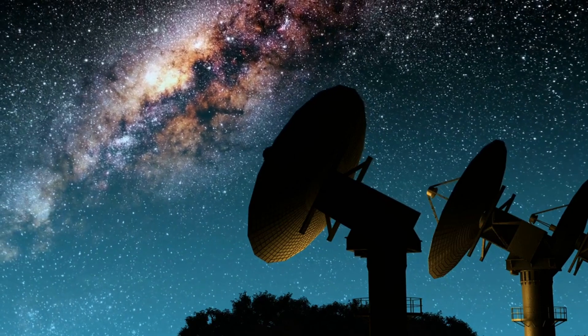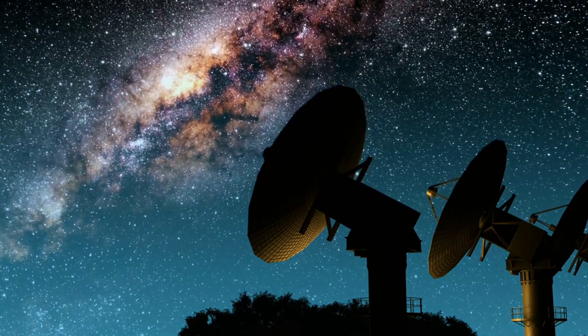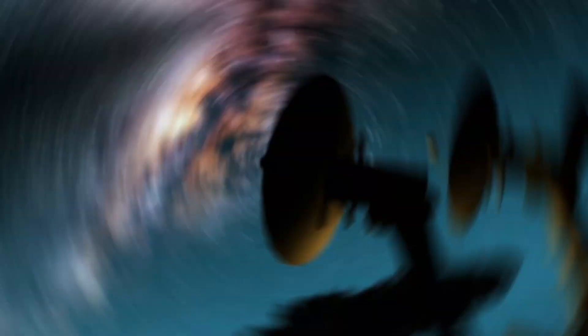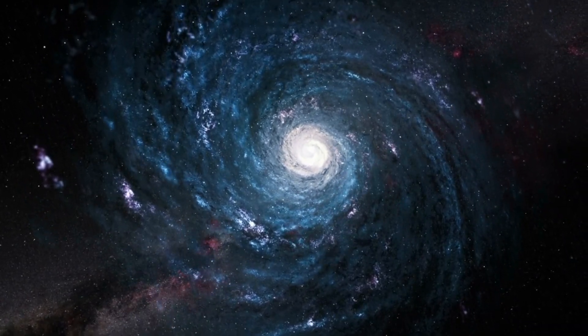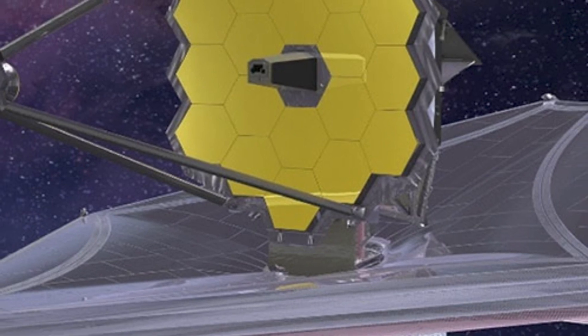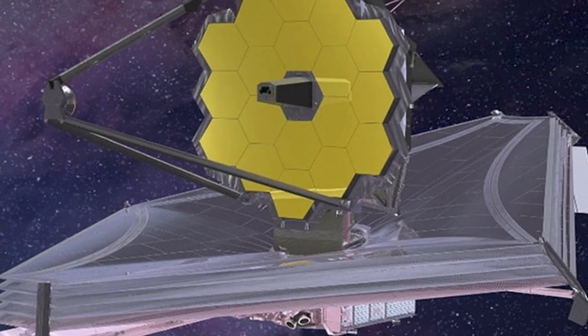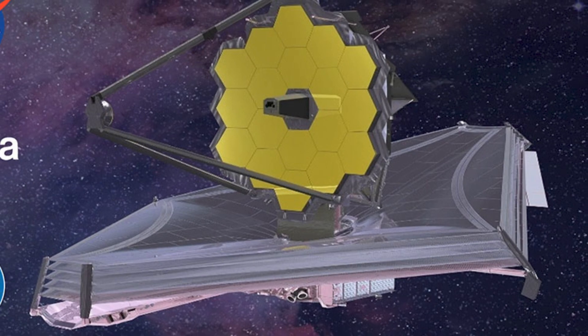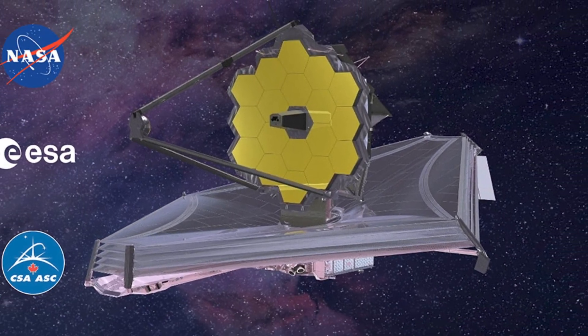James Webb Space Telescope will also look at exoplanets that the Kepler Space Telescope has found, or it can also follow up on real-time observations from ground space telescopes. The JWST is the product of an amazing international collaboration between NASA, the European Space Agency, and the Canadian Space Agency.